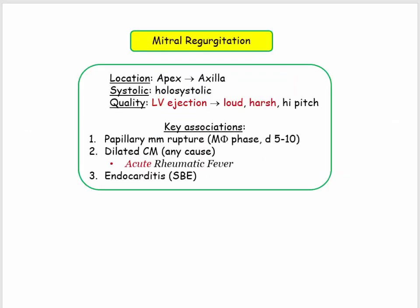Here is the summary of mitral regurgitation. It is a systolic murmur heard at the apex, radiating to the axilla, and it is described as loud or harsh. Here are the key associations and derivatives that will be discussed in this video.